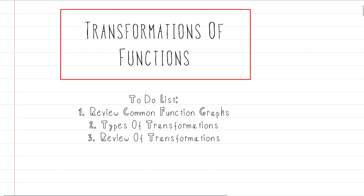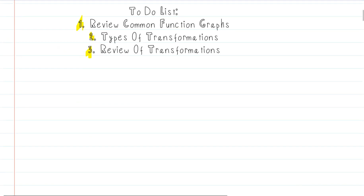Let's talk about our to-do list. First thing we'll do is we will review some common function graphs. There are seven function graphs that you see all of the time in algebra, and we'll do a quick review of them so you can have those fresh in your mind, because that's really the starting point for the discussion today. The second thing we'll do is we'll talk about types of transformations. We'll take those seven types of functions and transform them. And then at the end, we'll do a quick review of all the types. Let's start.